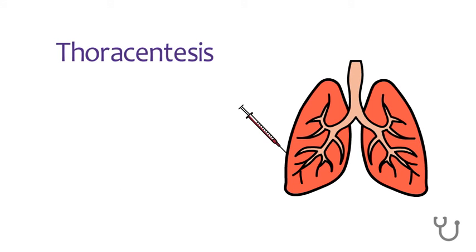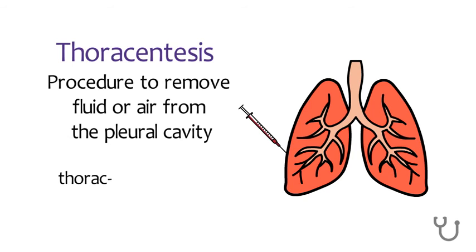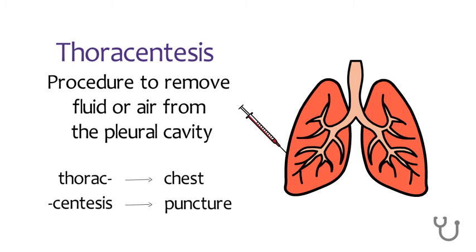A thoracentesis is a procedure performed to remove fluid or air from the pleural cavity, the space between the two layers of the pleura in the lungs. When there is too much fluid or air in the cavity, the person might not be able to breathe properly, and a thoracentesis can help relieve this.